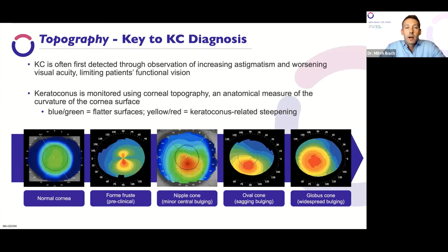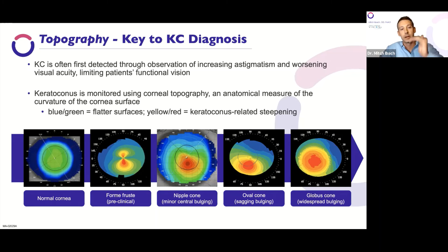Let's move forward to topography. We have tools in our practices that can give us initial red flags, but I believe for the definitive diagnosis and for monitoring patients over time — looking for progression or halting progression — topography is such a key in managing this disease. Topography is really an elevation map. The warmer the color, the steeper that area of cornea is going to be. What we're looking for in a healthy cornea is that dumbbell shape or infinity sign, symmetric between the superior and inferior cornea. Topography tells us anterior corneal shape, symmetry, curvature, keratometry values K1 and K2, and corneal astigmatism.